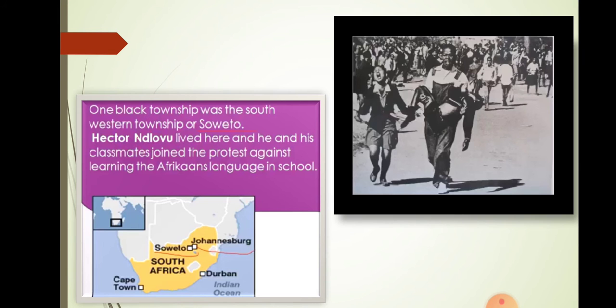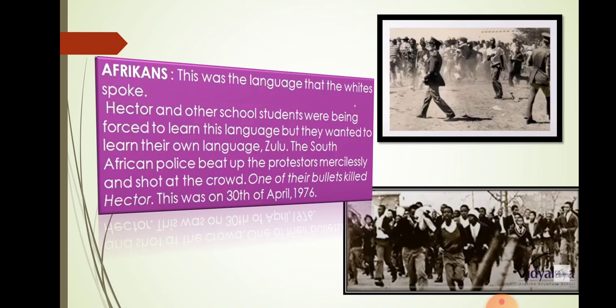One black township was the south-western township called Soweto. Hector Peterson lived here and he and his friends, his classmates, joined the protest against learning the Afrikaans language in school. This was the language that the whites spoke. Hector and other school students were being forced to learn this language, but they wanted to learn their own language, that is the Zulu. The South African police battered the protestors mercilessly and shot at the crowd. One of their bullets killed Hector. This happened on 16th of June 1976.